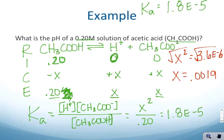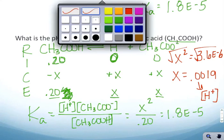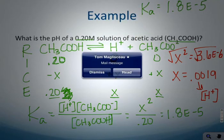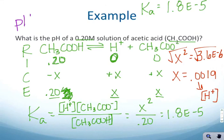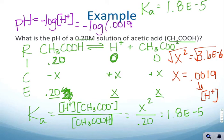And so what's the pH? Well, this X is equal to the concentration of the hydrogen ion. And to find the pH of something, pH is equal to the negative log of the hydrogen ion concentration. So in this case, it's going to be equal to the negative log of 0.0019. And that's going to be equal to 2.72.